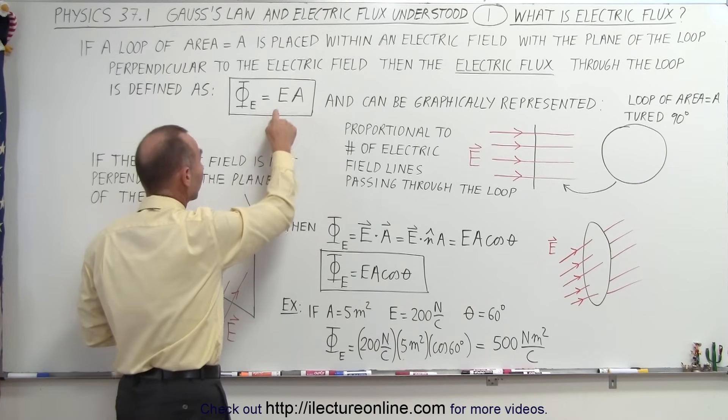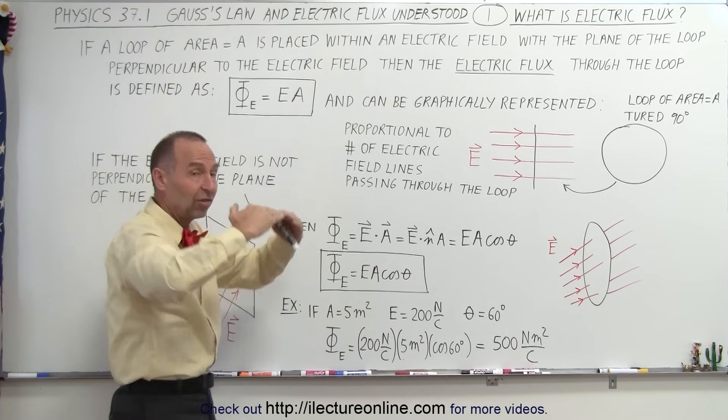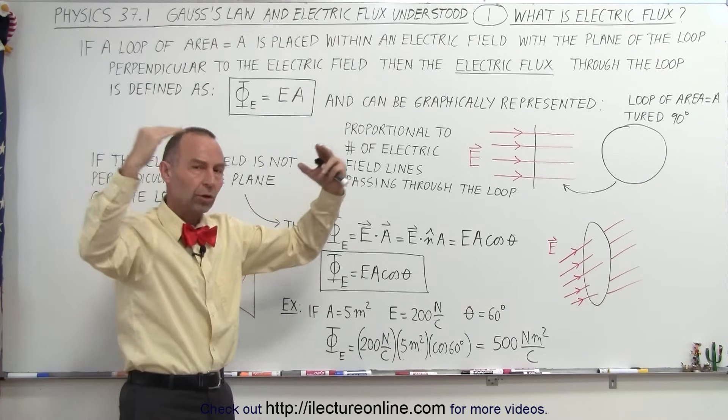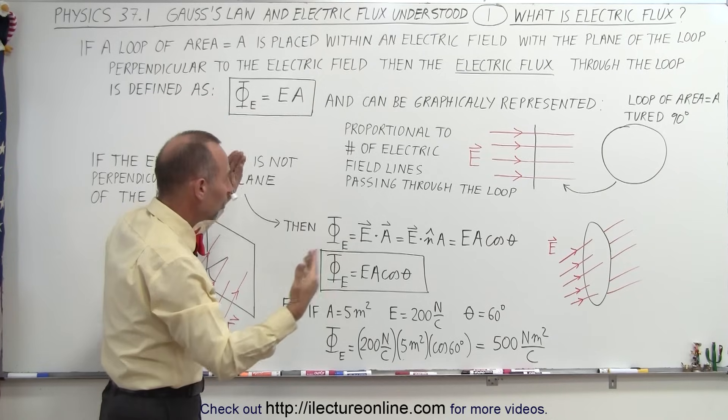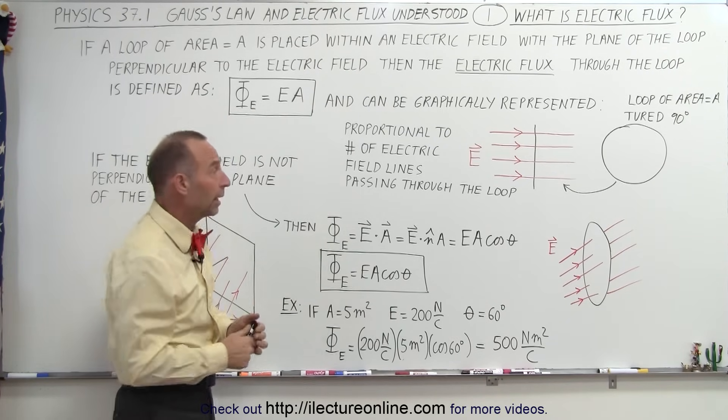Really the amount of flux depends upon the strength of the electric field and the size of the loop, whether it's small or large. The amount of flux through the loop will be proportional to that area.